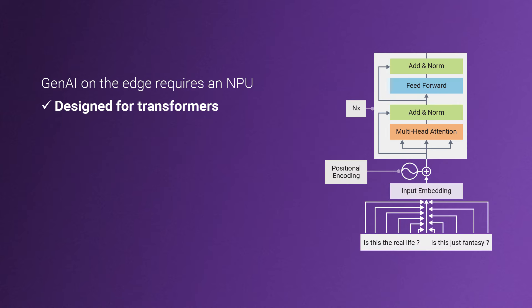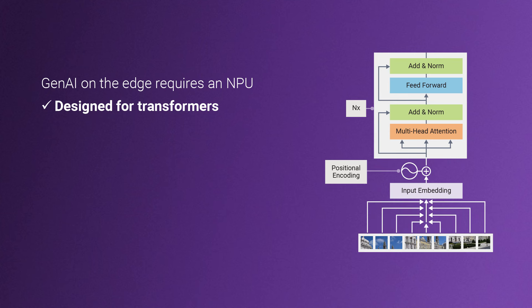Second, Generative AI models are based on transformer neural networks. Transformers have enabled Generative AI because of their ability to better understand complex relationships between words in text or pixels in an image. The NPU you select must be designed with transformers in mind.